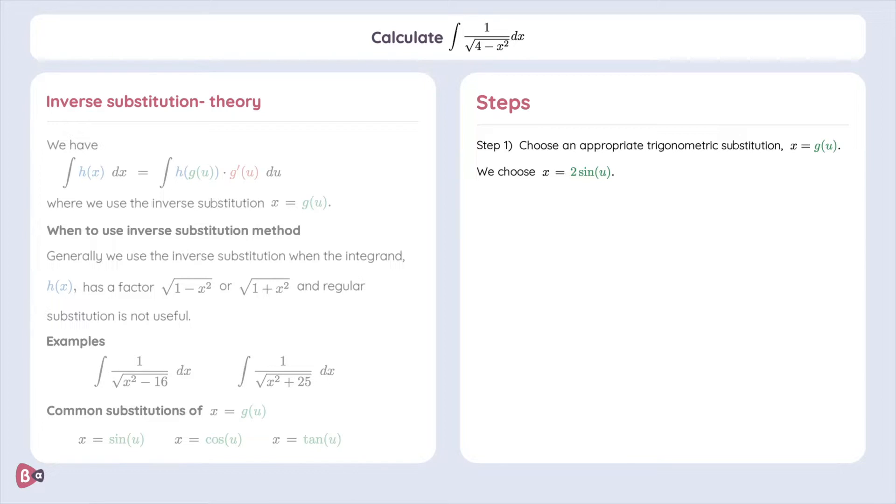We'll get to why there is a 2 in front of the sine in a sec. Looking at our formula, we also need to find out g prime of u and rewrite dx in terms of du to apply our formula.